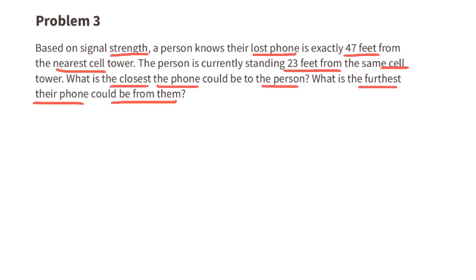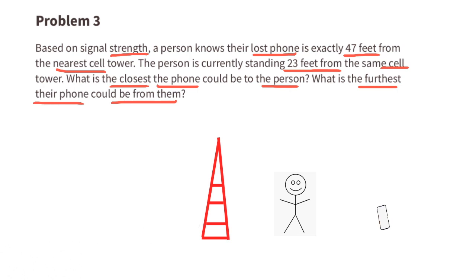Problem number 3: based on signal strength, a person knows their lost phone is exactly 47 feet from the nearest cell tower. The person is currently standing 23 feet from the same cell tower. What is the closest the phone could be to the person? Using the illustration of the phone tower, the person, and the cell phone: 47 minus 23 equals 24, so the closest the cell phone could be to that person is 24 feet.